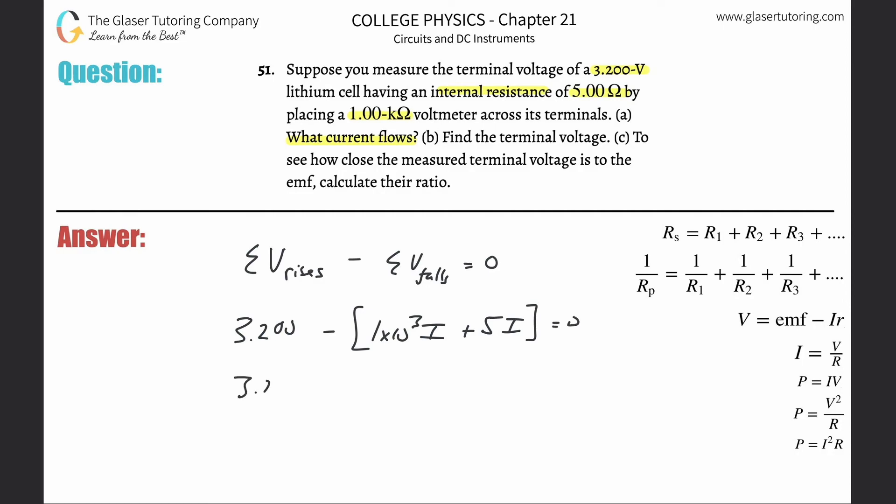So essentially this equals zero. This then works out to be 3.200 minus then you can combine those like terms, so that would be 1005 times i. And then all we simply have to do now, you can add this term over to the right hand side, so this will be 3.2 is equal to 1005i. Divide out the 1005 from both sides, 3.2 divided by 1005, and this comes out to be 3.18 times 10 to the minus 3, and that's in amps. So that takes care of letter A, that's the current.